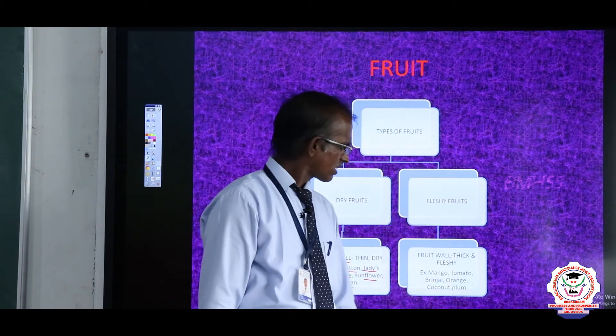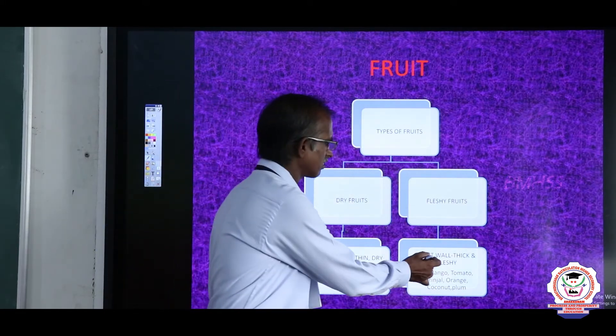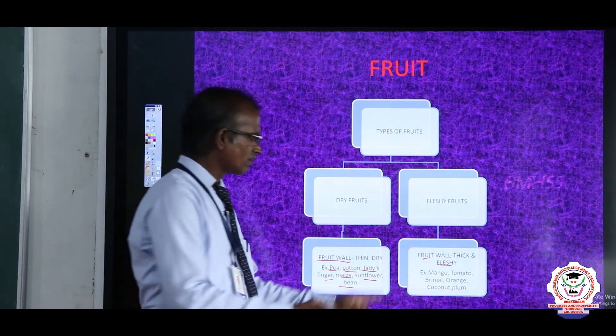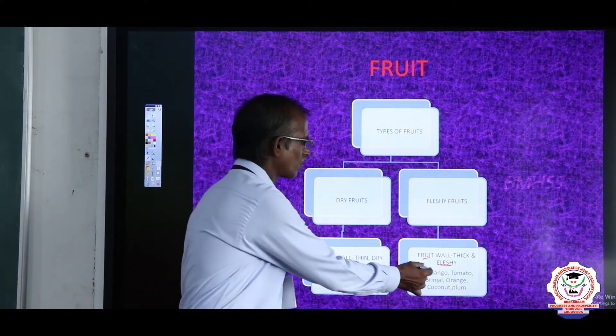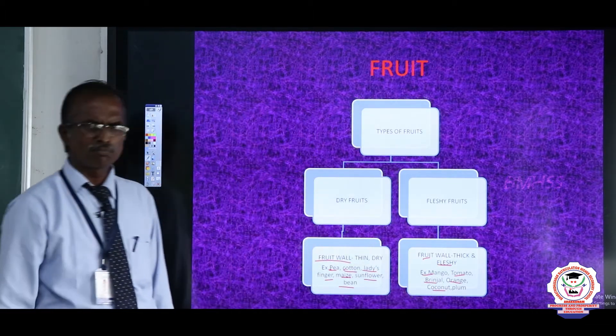Fleshy fruit: In the case of mango fruit, they are fleshy and thick in nature. The fruit wall is thick. That fruit is called fleshy fruit. Examples: mango, tomato, brinjal, orange, coconut, and plum.